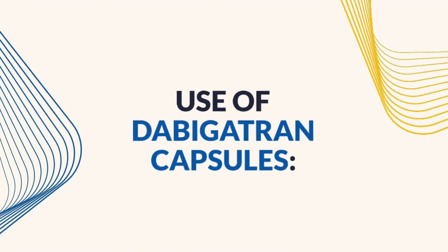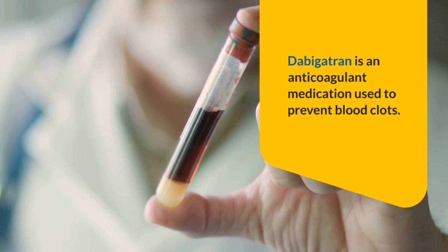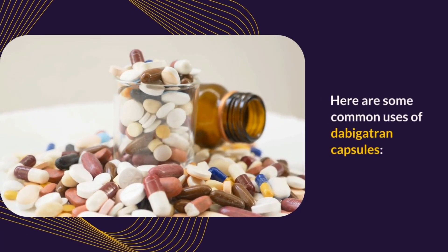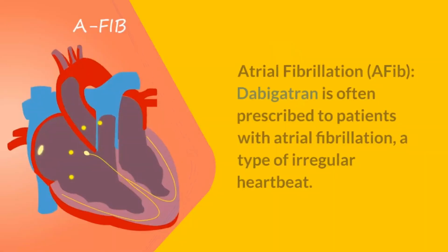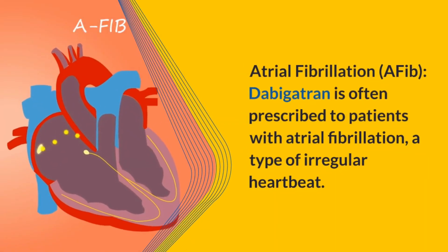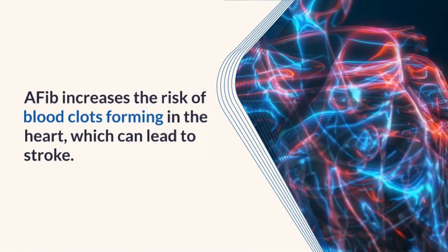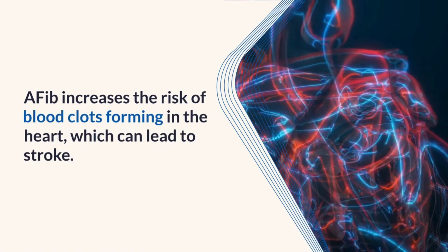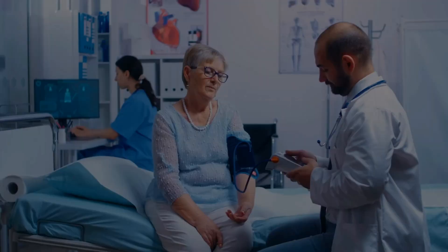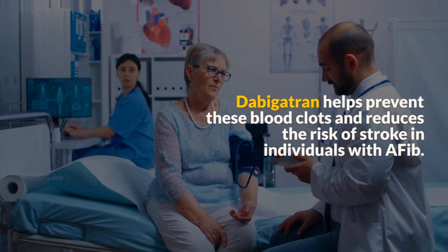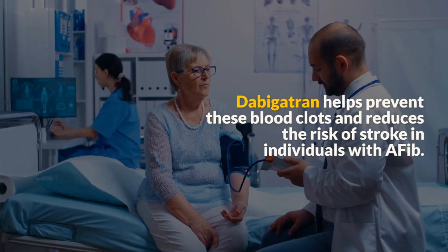Use of dabigatran capsule. Dabigatran is an anticoagulant medication used to prevent blood clots. Dabigatran is often prescribed to patients with atrial fibrillation, a type of irregular heartbeat. AFib increases the risk of blood clots forming in the heart, which can lead to stroke. Dabigatran helps prevent these blood clots and reduces the risk of stroke in individuals with AFib.